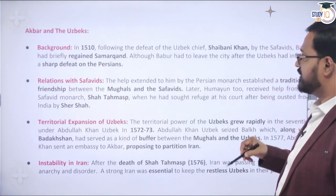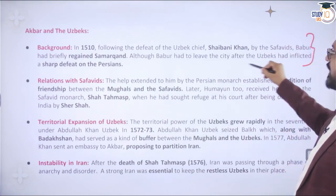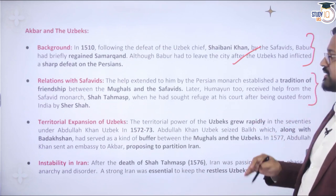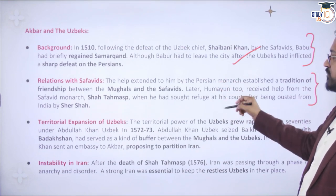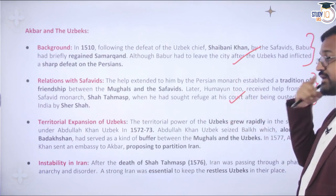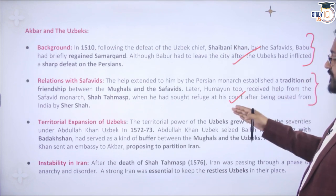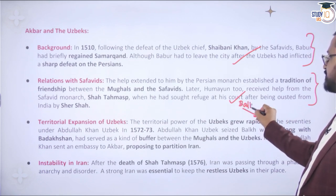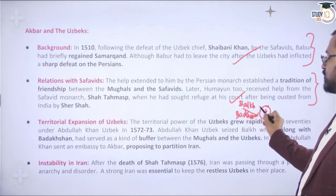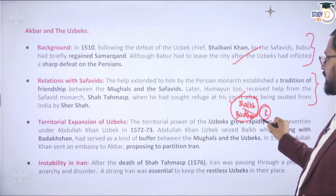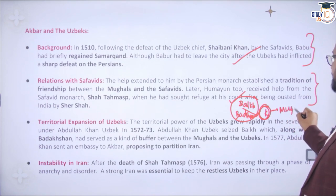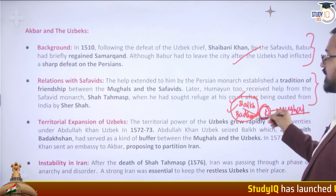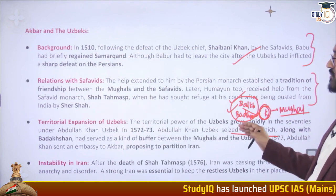Regarding Uzbek relations: it all started with Babur. The Safavid dynasty was also in Iran at this time. The key concern was Balkh and Badakhshan — if these areas were captured, then Kabul would be next, since Kabul was the scientific frontier of Mughal territory. Mughals were always in a precarious position fearing the loss of Kabul. Under Abdullah Khan in 1572, the Uzbeks captured significant territory.